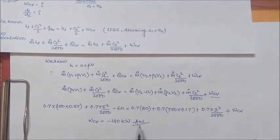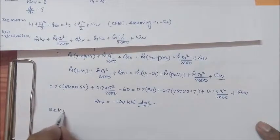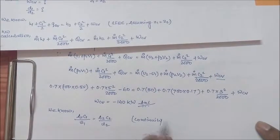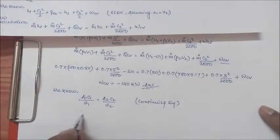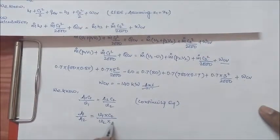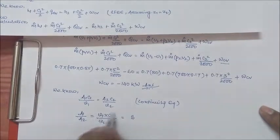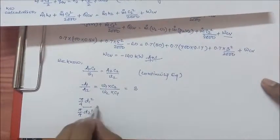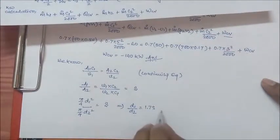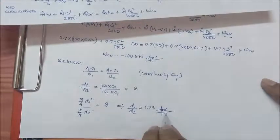For the second part, we use the continuity equation: A1·C1/V1 = A2·C2/V2. From this, A1/A2 = V1·C2 / (V2·C1) = 3. Since A = π/4·D², we get D1²/D2² = 3, giving D1/D2 = 1.73. This is the answer to the second part of the question.